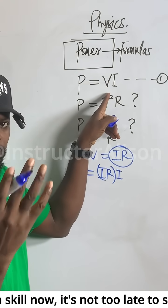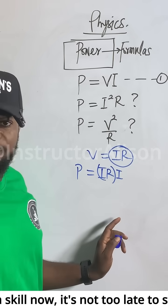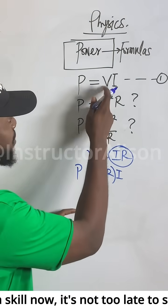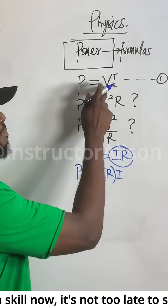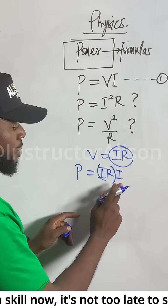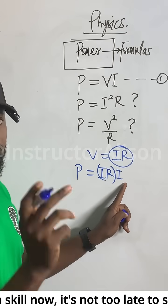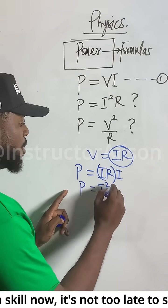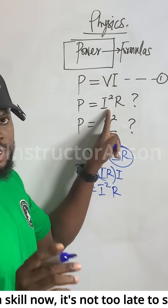You understand what I'm telling you? Focus now. In place of this V, I carry this IR and replace it. I bring the I back. So you see I times I will give you I squared. P will be equal to I squared, then this R is there. If you don't get this one, let me know. Is it clear?